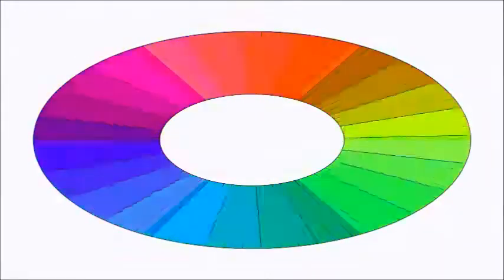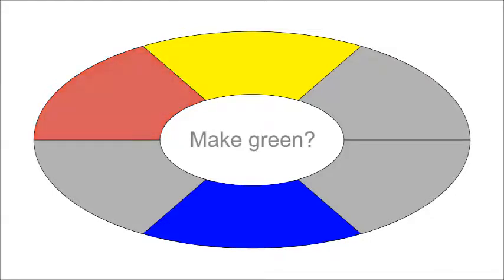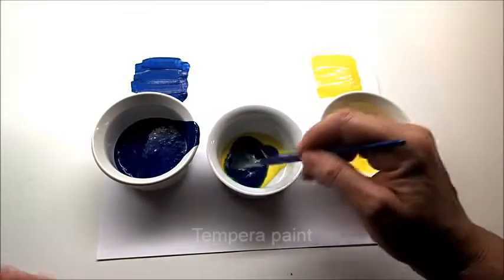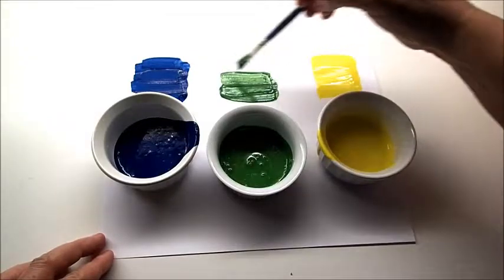Often, I see the primary colors shown as blue, red, and yellow, like this. Can we make green by mixing this yellow and this blue? Yes, we can, but this green does not look as bright as the green that we can make by mixing yellow and cyan.